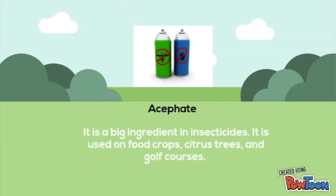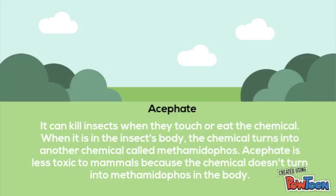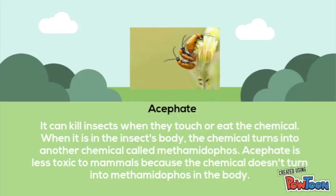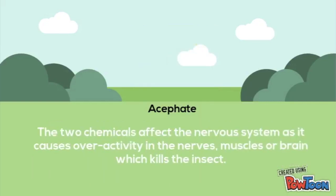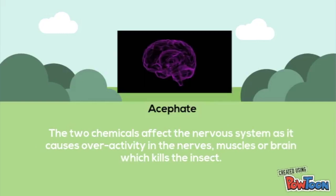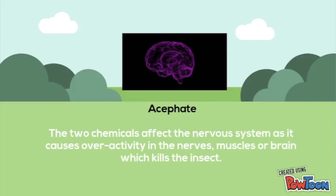Acephate is a big ingredient in this space. It is used on food crops, city trees, and golf courses. It can kill insects when they touch or eat the chemical. When it is inside the insect's body, the chemical turns into another chemical called methamidophos. Acephate is less toxic to mammals because the chemical doesn't turn into methamidophos in the body. The two chemicals affect the nervous system as it causes overactivity in the nerves, muscles, or brain, which kills the insect.